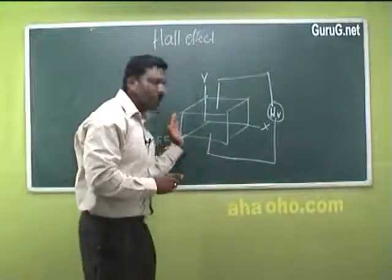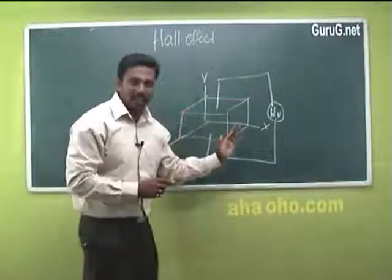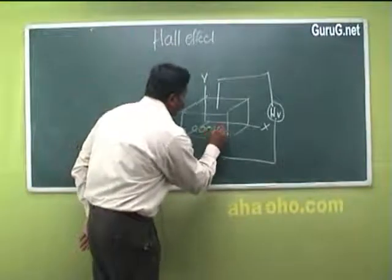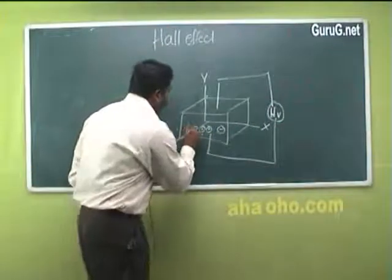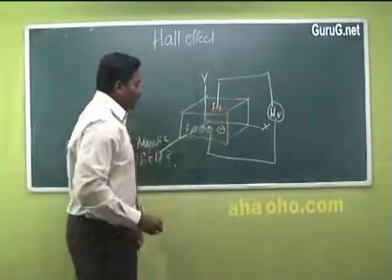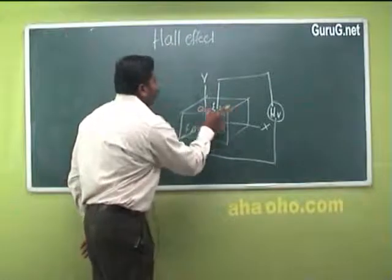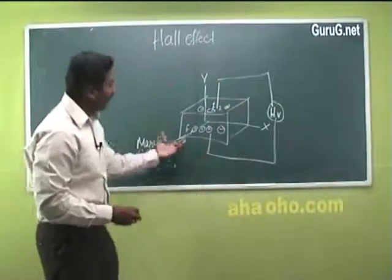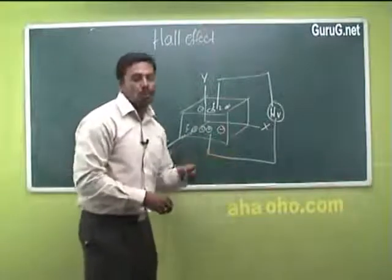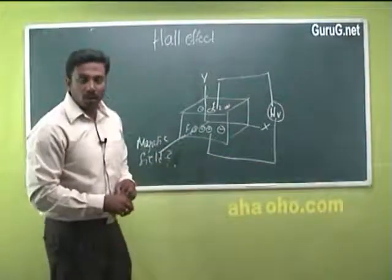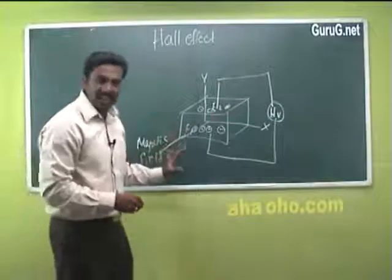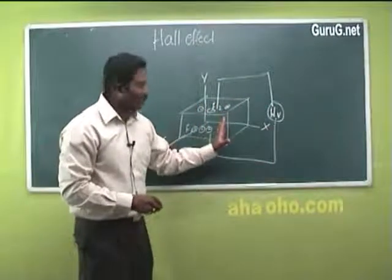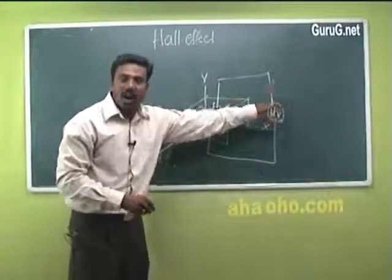Due to the applied magnetic field, as electrons move from left to right, all the electrons start accumulating in face 1, while face 2 is on the opposite side. All the electrons, due to the magnetic field, accumulate in face 1. A potential difference is developed between face 1 and face 2, and due to this a voltage is developed. This voltage is called the hall voltage.